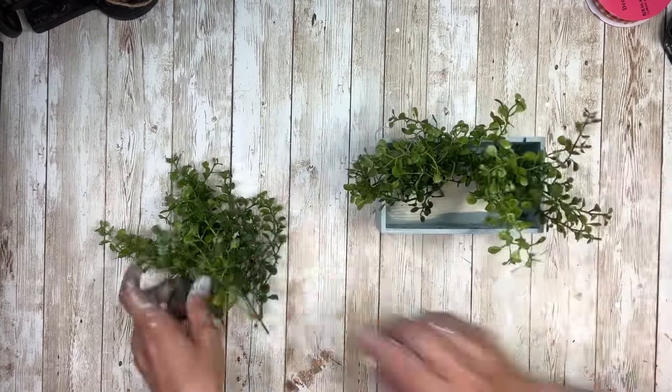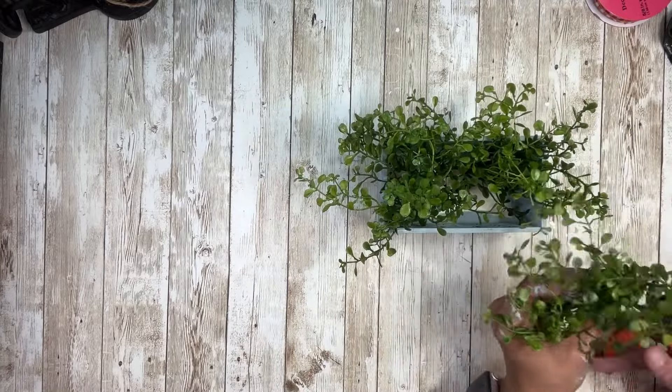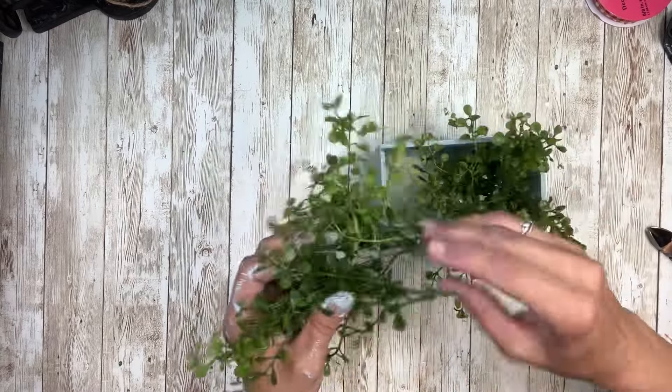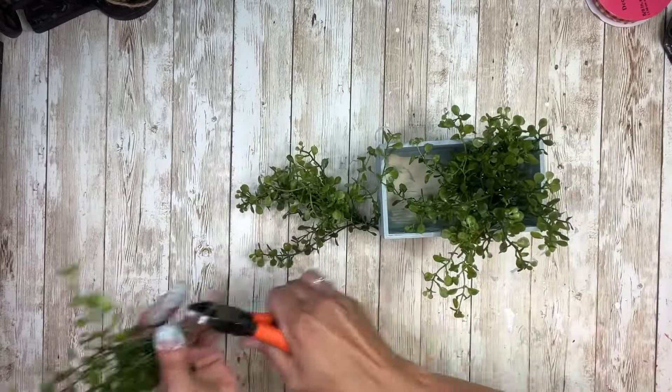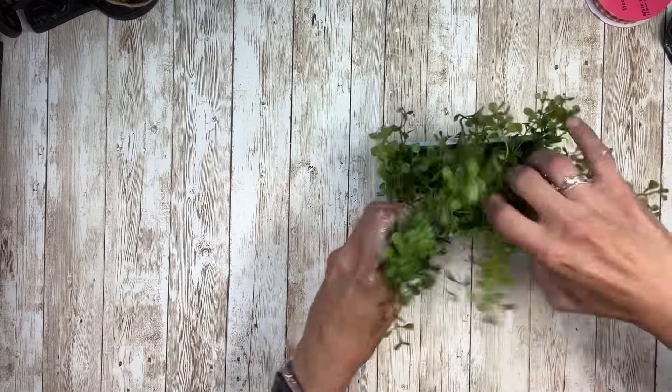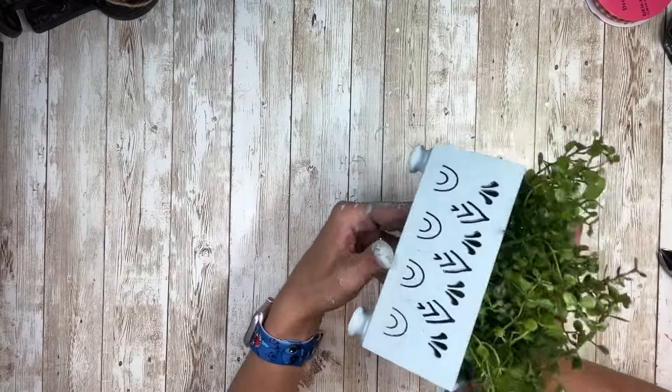And then once I have all my pieces cut, I can go ahead and fill up my little crate here. Cut off some of the excess stems if I wanted them to sit a little shorter. So then I can stick those in there once I have decided on the height that I want it all. And then just kind of fill the box back up. And you can fill it with whatever you have on hand. Greenery, florals, it's up to you.